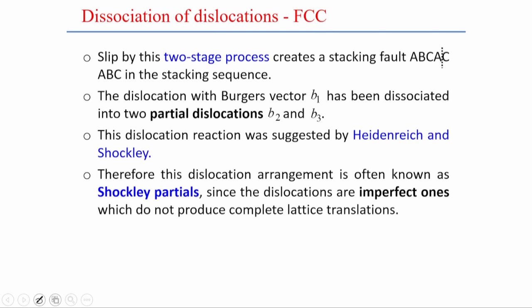If a dislocation with Burgers vector B1 dissociates into two partials B2 and B3, this dislocation reaction was suggested by Heidenreich and Shockley. Therefore, this kind of dislocation arrangement is known as Shockley partials. Since one full dislocation consists of two imperfect partials that do not produce a complete lattice translation, they are called partial dislocations.